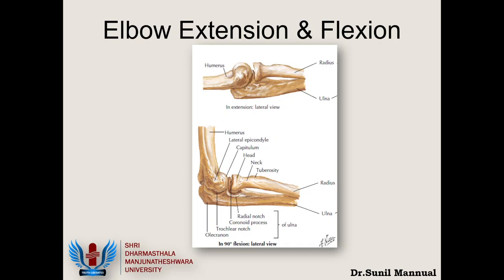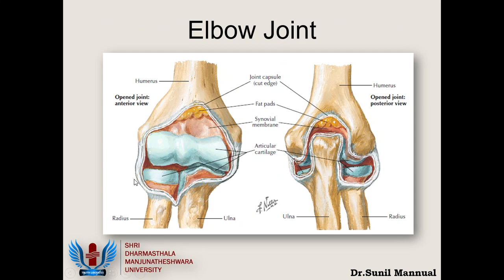This is a beautiful diagram from Netter showing the articulation with the joint capsule opened — anteriorly and posteriorly. Anteriorly on the proximal ulna there is a lip called the coronoid process. In full flexion, this coronoid process comes and hits the anterior surface of the humerus, and the cushioning is provided by a fat pad inside. Similarly, in extension the olecranon hits against the posterior surface of the distal humerus, and there again is a fat pad providing cushioning.